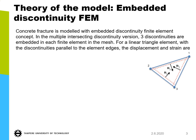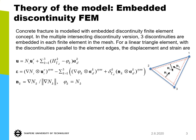First, we present the theory of the simulation model. We use the embedded discontinuity finite element method for modeling concrete fracture. We have the multiple intersecting discontinuity version where three discontinuities are embedded before the analysis in each finite element in the mesh. For the triangular element, the discontinuities are embedded parallel to the element edges. For such a case, we can write the displacement and strain fields as follows. The displacement field consists of the regular term and then the enhanced term — that is, the Heaviside function defined at each crack and a special ramp function φ, which I explain shortly. The displacement opening vector is defined accordingly. Taking the gradient, we get the strain, where there is a regular term first and then the enhanced terms. Delta here is the Dirac delta function coming from the gradient of the Heaviside function.